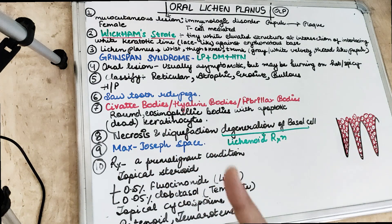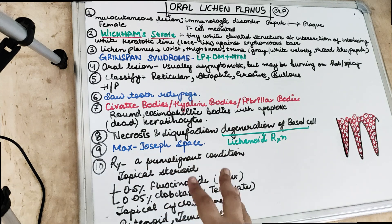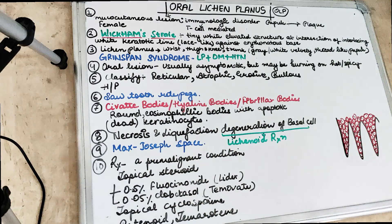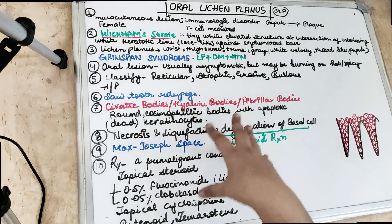In oral lichen planus, there are papules which coalesce to form plaques. There is formation of both skin lesions and oral lesions. This T-cell mediated autoimmune disease leads to oral lichen planus, where cytotoxic CD8 cells combine with T cells and cause apoptosis of oral epithelial cells — essentially, degeneration of the basal cells.